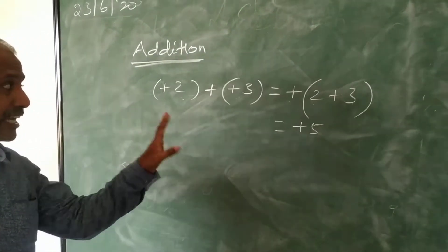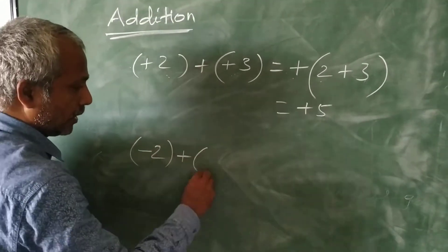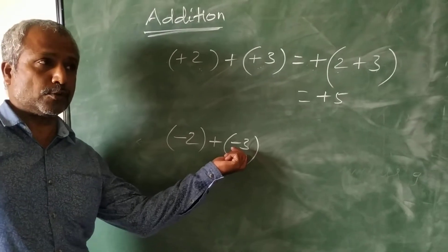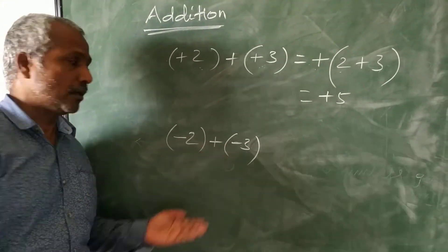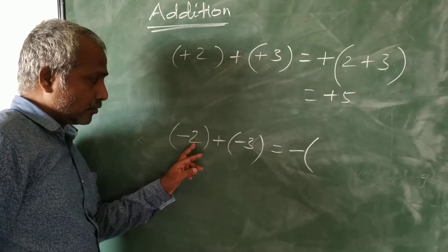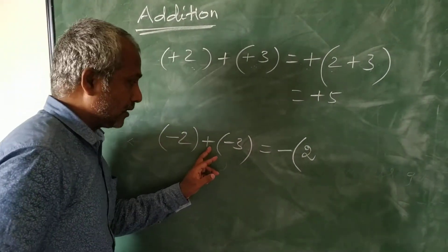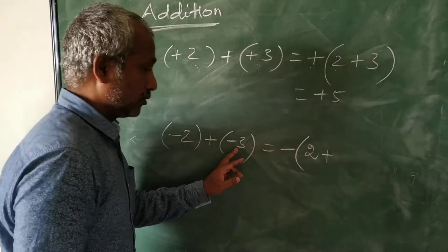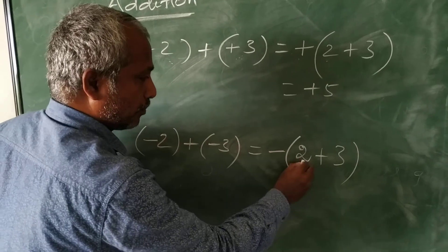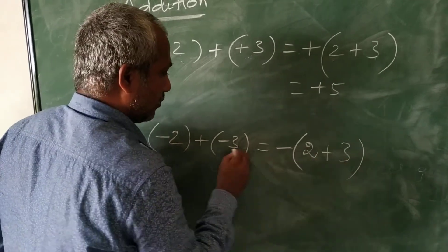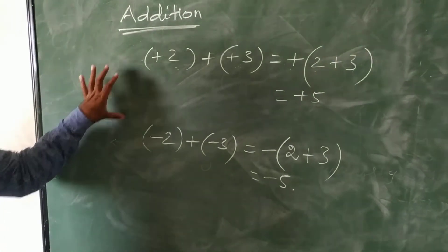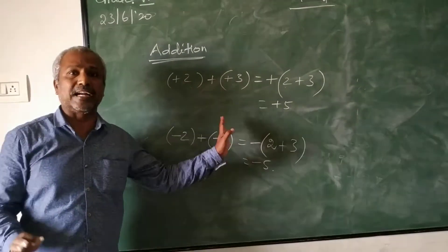Now for the same sign with negative values: minus 2 plus minus 3. Look at those two numbers — both are negative integers. When adding same-sign numbers, take that sign outside first — here, minus. Then write 2 plus 3 inside. Minus times plus gives minus 2, minus times plus 3 gives minus 3. Adding them: minus 2 plus minus 3 gives minus 5. Whenever adding same-sign numbers, put the same sign then add.